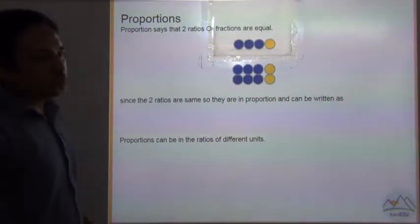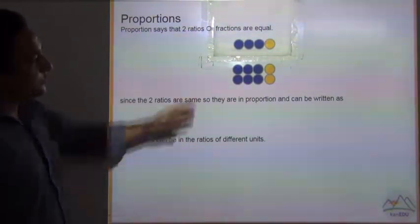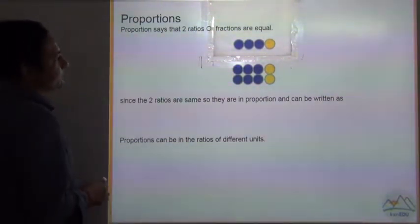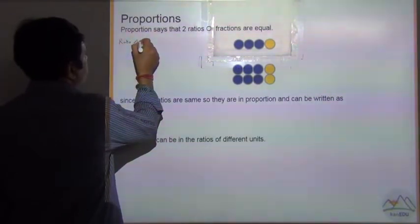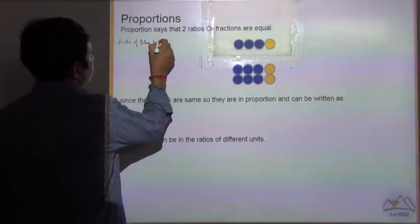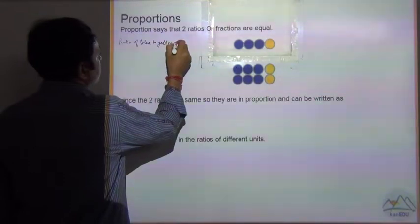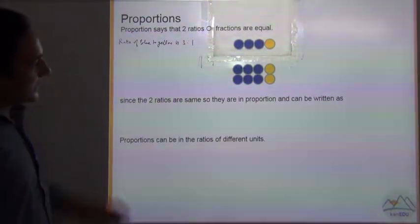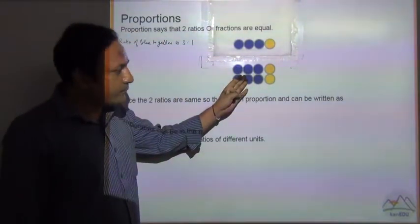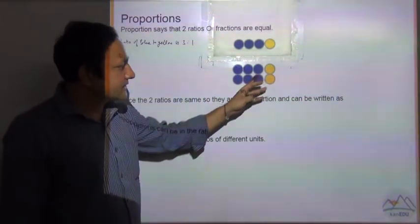Here, blue to yellow. Ratio of blue to yellow boxes. The ratio of blue to yellow is 3 is to 1. And here the ratio of blue to yellow is 6 is to 2.